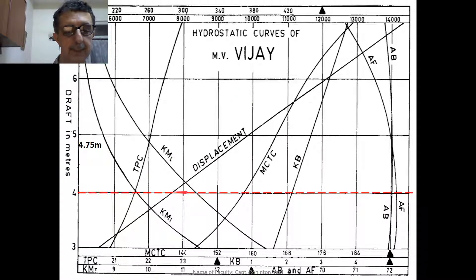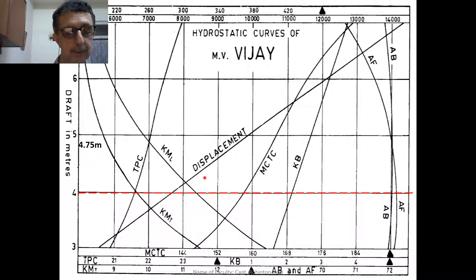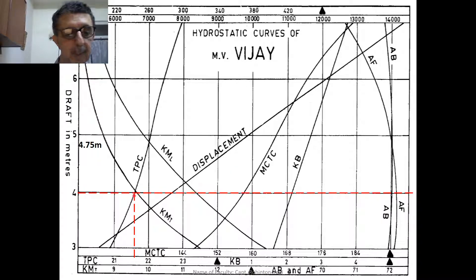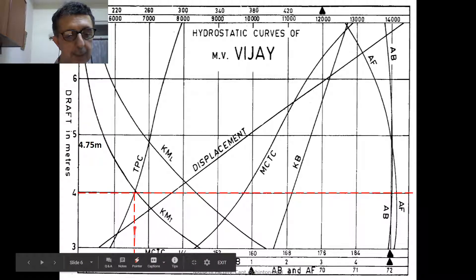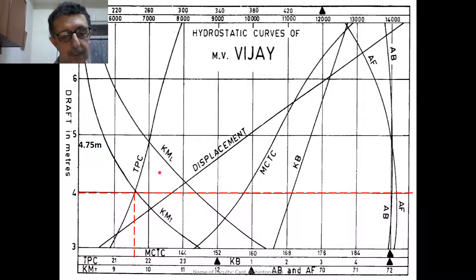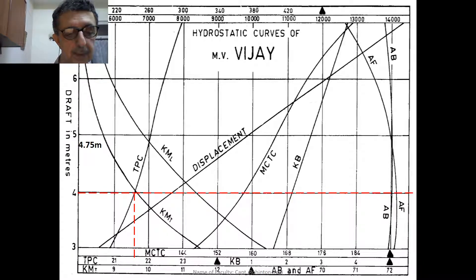We draw a horizontal line from left to right at the 4-meter draft mark, then drop perpendiculars either to the bottom or top depending on which value we want to read. For TPC, the curve meets the 4-meter draft line and we drop a vertical down. The value reads approximately 21.7 metric tons per centimeter.